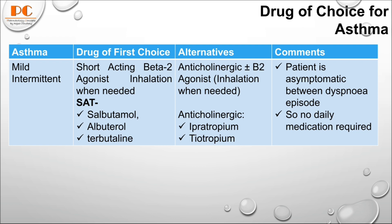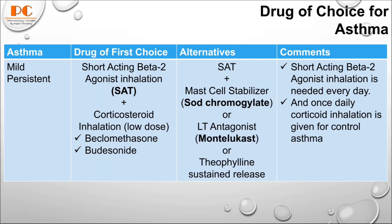For mild persistent asthma, the first choice is a short-acting beta-2 agonist by inhalation route, plus inhaled corticosteroid at a low dose, such as beclomethasone or budesonide. These are the drugs arranged for the treatment of mild persistent asthma as the first choice.